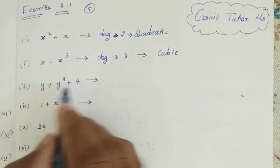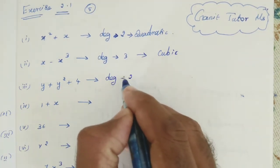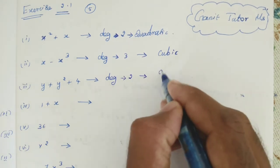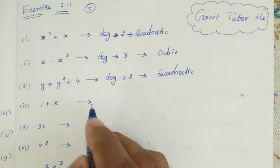Next step. Y plus y squared plus 4. So highest power is the degree. What is the degree here? 2. So it is quadratic. Quadratic polynomial.